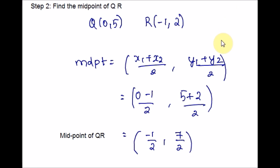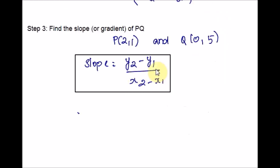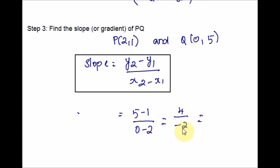Hope you are clear with step 2. So far we found the midpoints of the two chords. Now let us find the slope of the two chords. I will write the formula on the board. Plugging in the values in the slope formula gives 4 over negative 2. Positive over negative gives a negative answer, so negative 2 is the gradient of PQ.